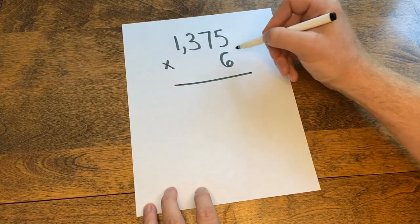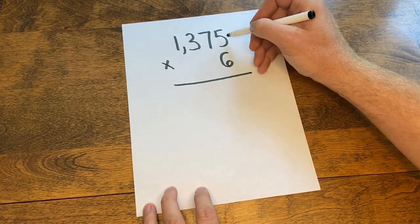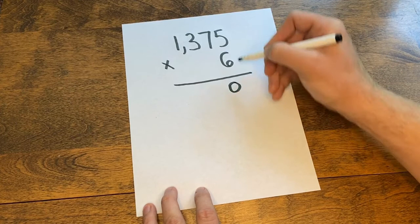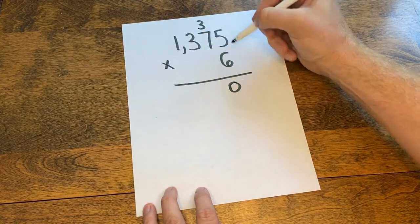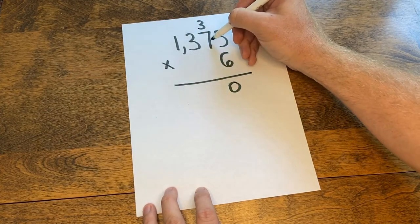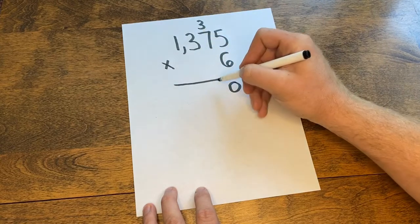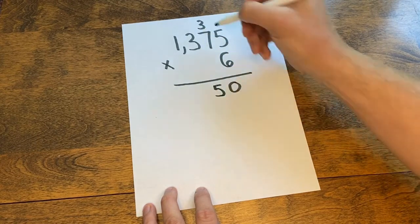I'm going to multiply my ones first. 6 times 5 is 30, put the 0 down, carry the 3. 6 times 7 is 42, plus 3 more is 45. So I'll drop my 5, carry my 4.